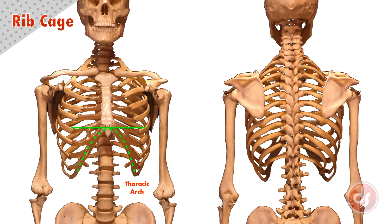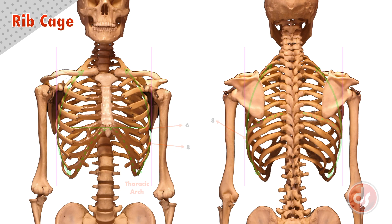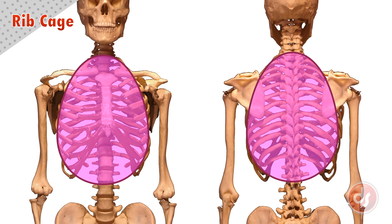The opening on the front of the rib cage is the thoracic arch. This wide notch allows us to have more flexibility in our torso. The top of the thoracic arch lands at the sixth rib, and the widest part of the rib cage is low, about the eighth rib. The rib cage is overall egg-shaped, but because the ribs angle down at the top and tuck under at the bottom, the rib cage will appear smaller from the front than the back.